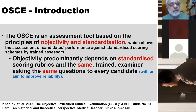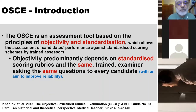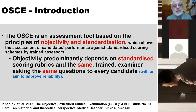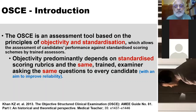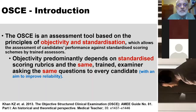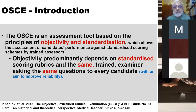The main principles or main characteristics of OSCE are two words: objectivity and standardization. The objectivity is achieved by standardized scoring rubrics — we have checklists — and then using the same trained examiner asking the same questions to every candidate. So there is standardization at every step of the examination, and the aim was that with this standardization, we will be able to improve the reliability.